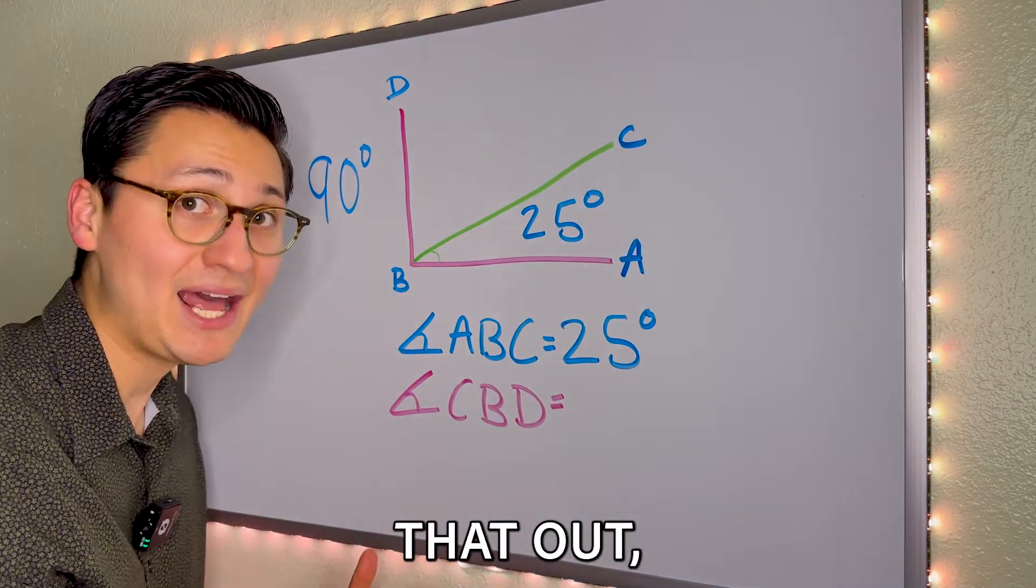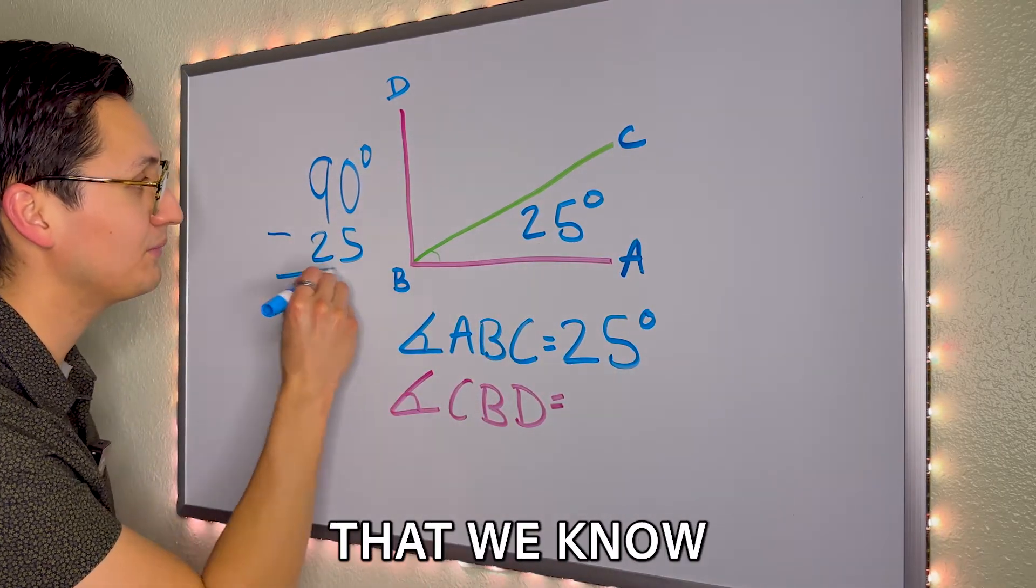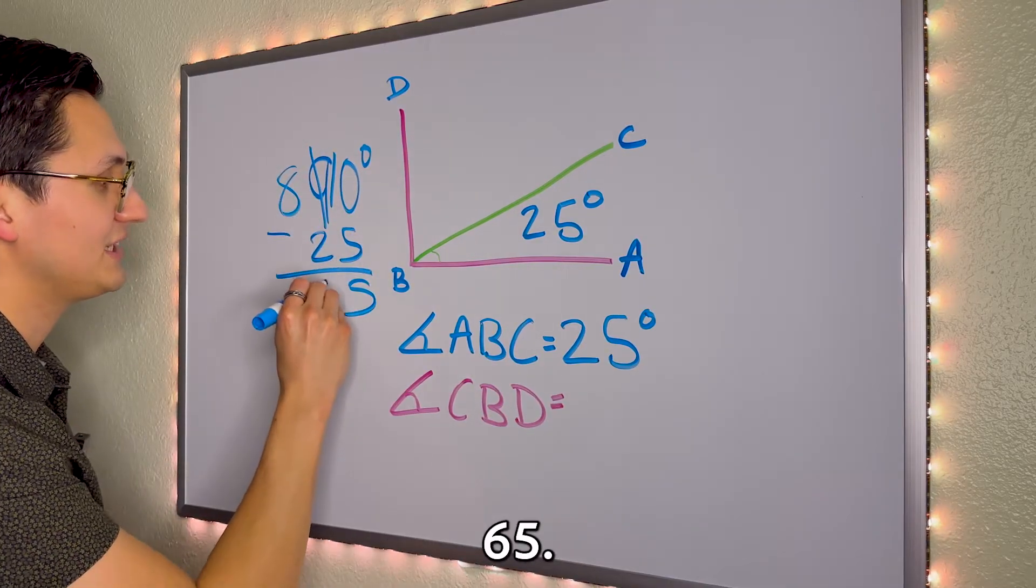So in order to figure that out, we subtract 25, which is the angle that we know, and we get 65.